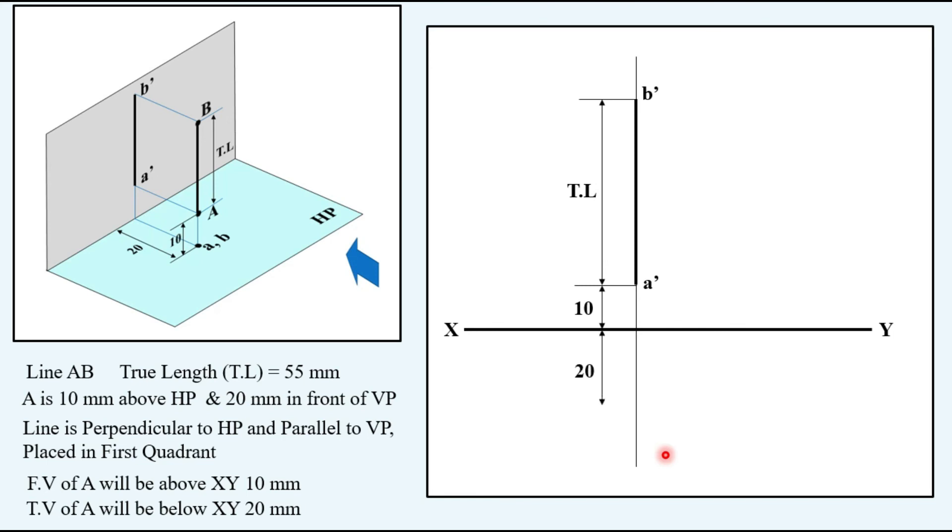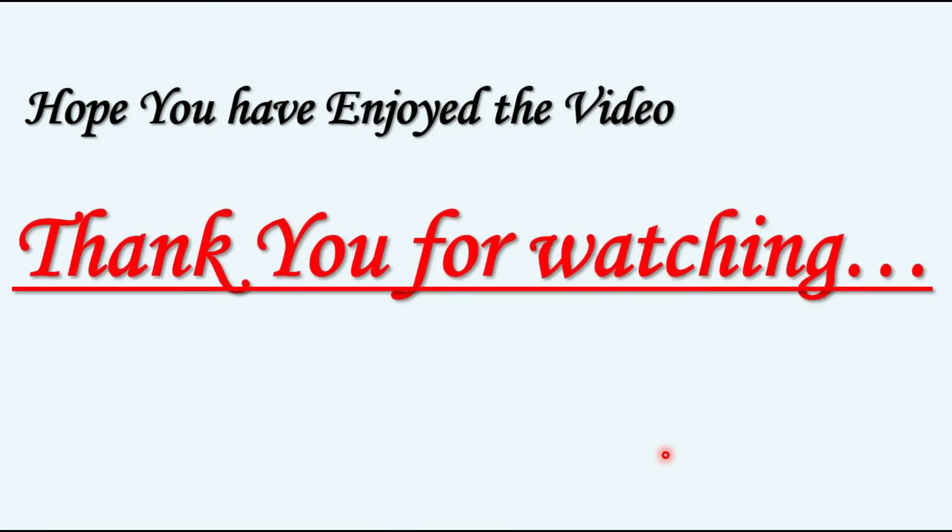Taking 20 mm from the XY line, obtaining the point, and the same point will be having top view of A as well as B. So this is the solution for sub-case A of case number two when the given line is perpendicular to HP and parallel to VP. Hope you have enjoyed the video. Thank you for watching.